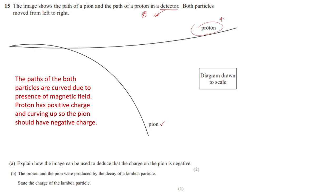Part b: the proton and pion were produced by the decay of a lambda particle. State the charge of the lambda particle. This is straightforward — since the pion has a negative charge and the proton has a positive charge, and they result from lambda's decay, lambda must have zero charge — it is neutral.